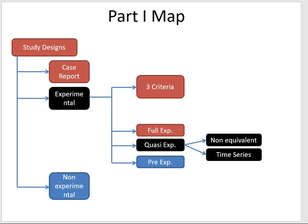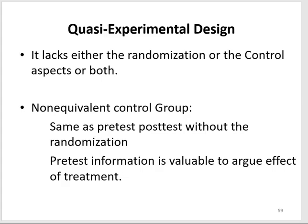The first design we're going to talk about is called the non-equivalent control group. Basically, in a study you have a control group and an experimental group, but you're not able to randomize people into either arm. The aim of randomization is to make sure the two groups are equivalent at baseline. Therefore, if you lose your randomization, you're no longer able to state that your control and experimental groups are equivalent.